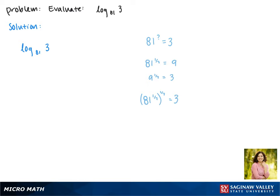Now when we have an exponent raised to an exponent, they multiply. So this is really 81 to the 1 fourth power gives us 3. So this makes our expression 1 fourth.